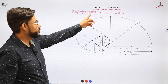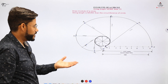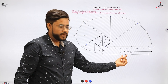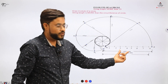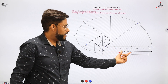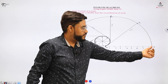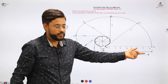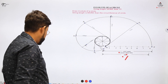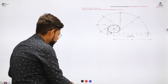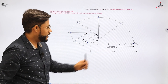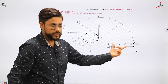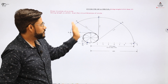Involute has two cases: the given length may be more than the circumference, or less than the circumference. Irrespective of whether the length is less or more, the procedure remains the same. For example, if the value is 165, divide it into 8 equal parts, measure the parts, place them on the tangent, and draw the involute. Similarly, if the length is less than π D, divide into 8 equal parts and cut the values on the sections — the involute is formed the same way.